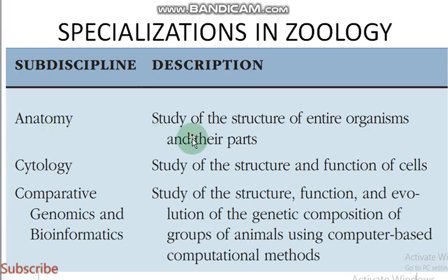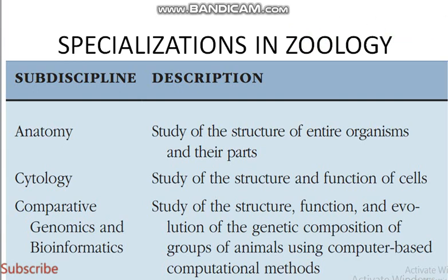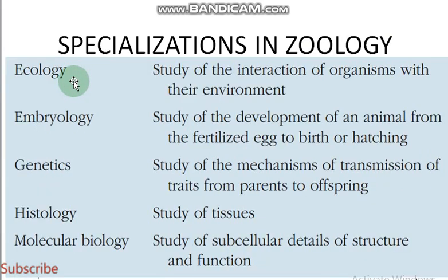Anatomy is the study of the structure of entire organisms and their parts. Cytology is the study of the structure and function of cells. Comparative genomics and bioinformatics involves the study of structure, functions, and evolution of the genetic composition of groups of animals using computer-based computational methods.